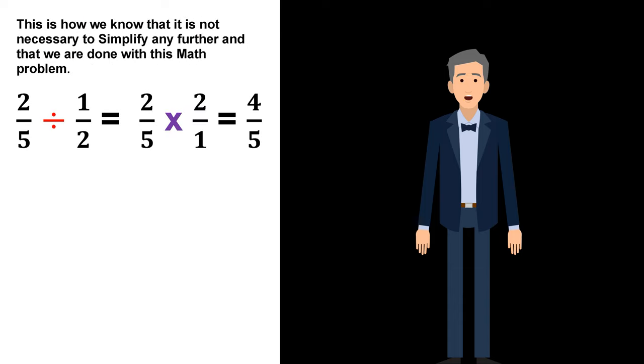This is how we know that it is not necessary to simplify any further, and that we are done with this math problem. 2/5 divided by 1/2 is equal to 2/5 times 2/1, which equals 4/5.